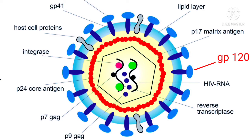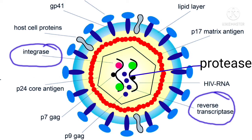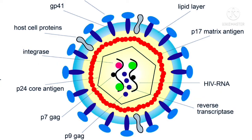The next layer is the matrix layer, with protein P70. After that is the capsid, which is made up of an icosahedral structure. Inside is the nucleocapsid, which covers the nucleic acids, and it is made up of P24 protein. Inside the capsid there are three important enzymes: integrase, reverse transcriptase, and protease. These three enzymes are very important for replication. There are also two copies of RNA, which the reverse transcriptase enzyme uses to produce DNA.